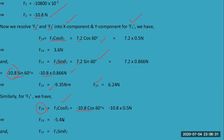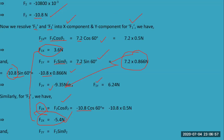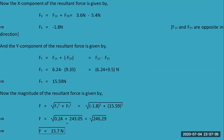We calculate F1x, then F2x — these are the x-components of the forces. Then we calculate F1y and F2y — the y-components. Since F1y and F2y are opposite in direction, a negative sign is used when adding the vertical components. All horizontal components are added together and all vertical components are added together.